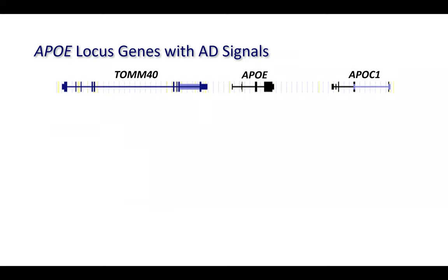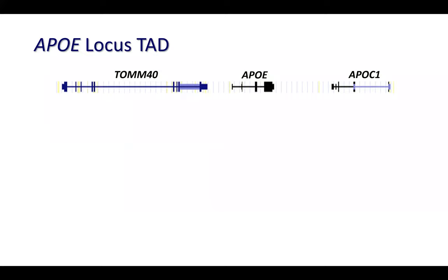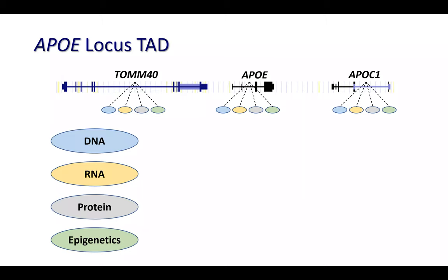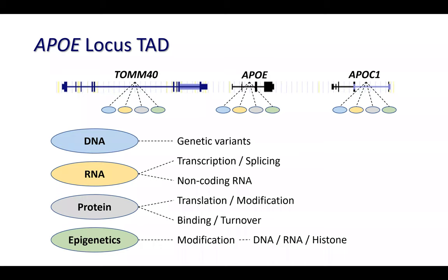Previously we thought about one gene; now we're dealing with three genes in a TAD. The complexity increases quite a bit — each gene has its own components and lots of variables. Initially we looked at the region by examining DNA, then our own research explored RNA and epigenetics. Now, with this new 3D genomics concept, we go back to the basics and revisit the genetic variants in the context of 3D genomics.